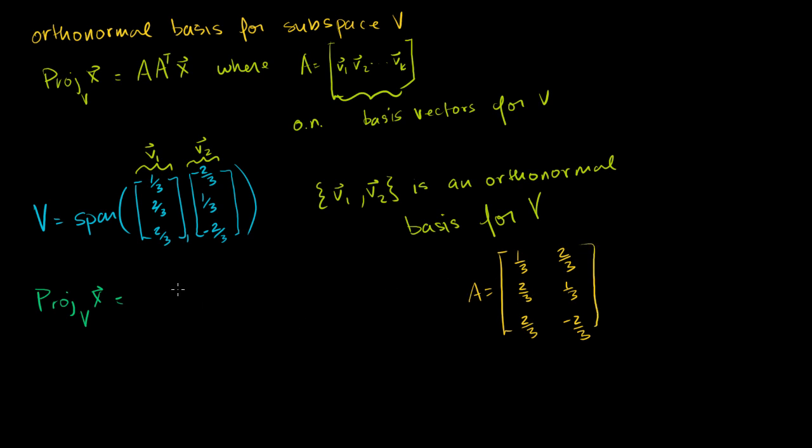And if we construct A in that way, then the projection of x onto v, this linear transformation, can be represented as A times A transpose times x. So to find our transformation matrix, we just have to multiply this guy times his transpose. So let's do that.